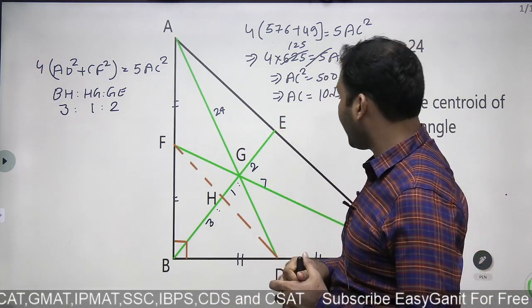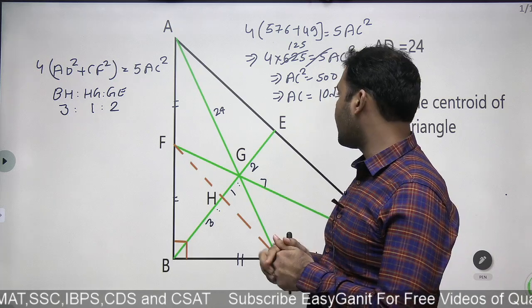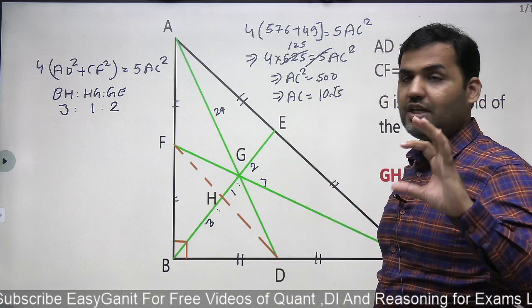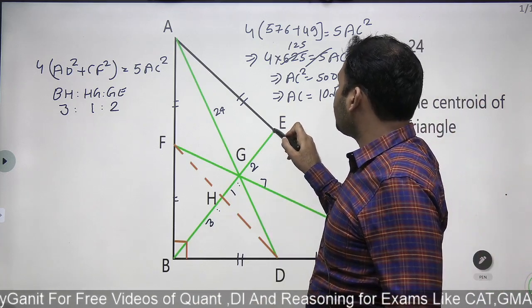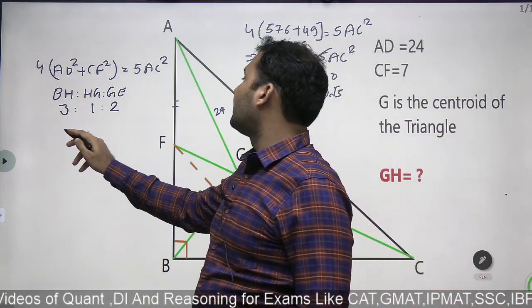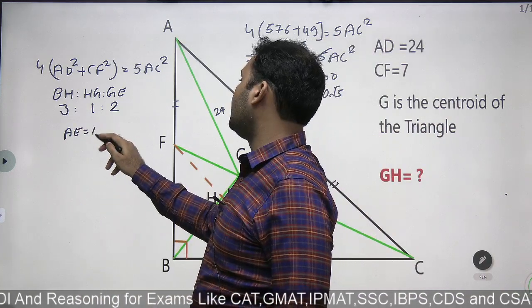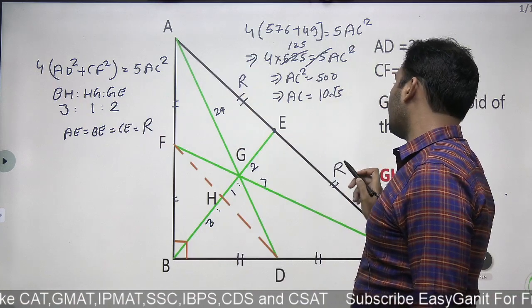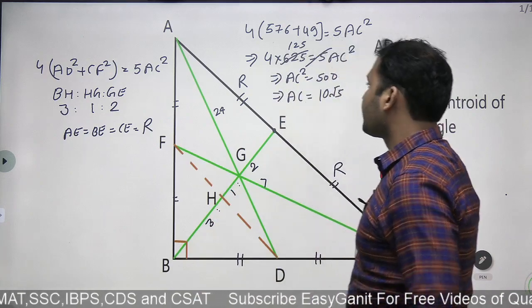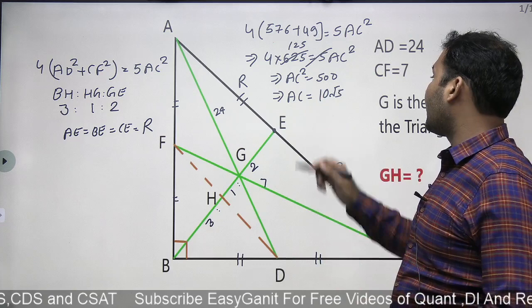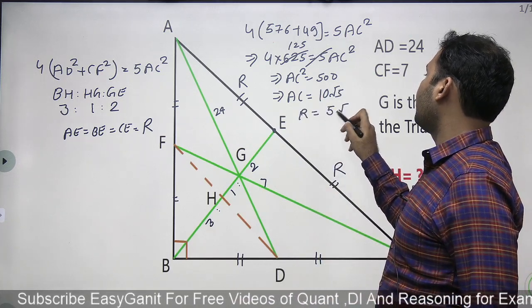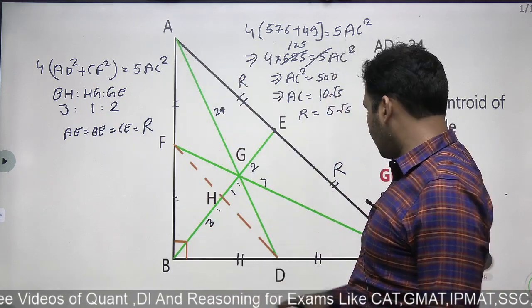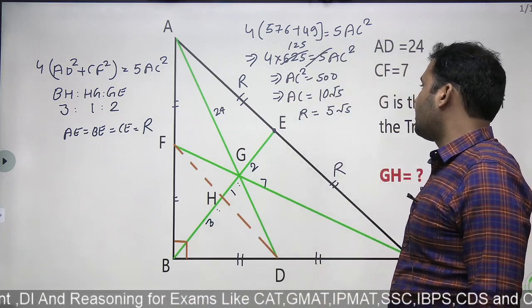Because BE is a median passing through the centroid, E is the midpoint of the hypotenuse. Another rule: in a right angle triangle, the circumcenter lies at the midpoint of the hypotenuse. So the length of AE = BE = CE = the circumradius R. Since AC = 10√5, the circumradius R = half of that = 5√5. And BE also equals 5√5, since E as center means the circle passes through all three vertices making BE the radius too.